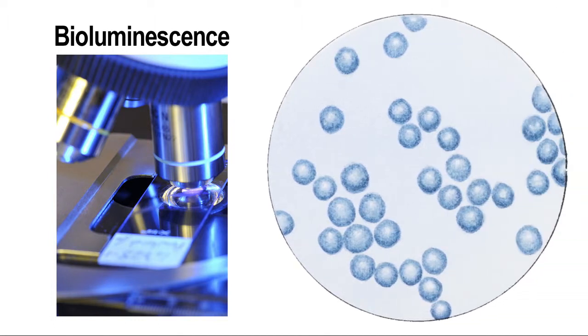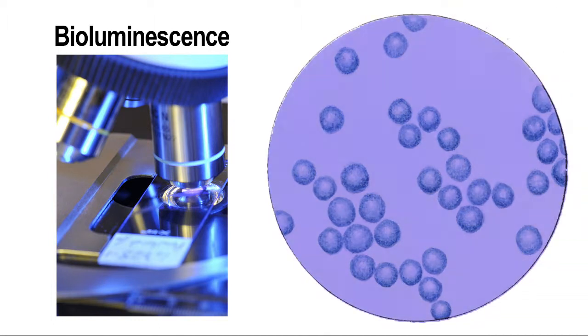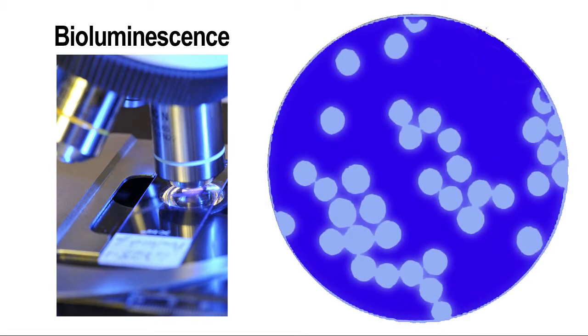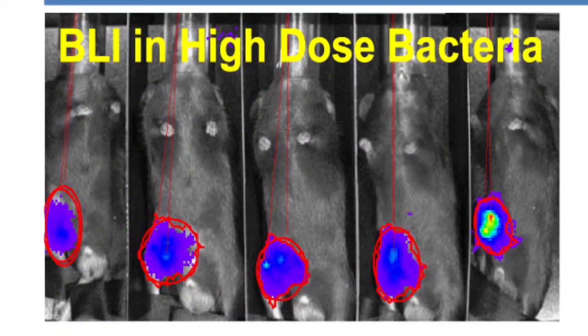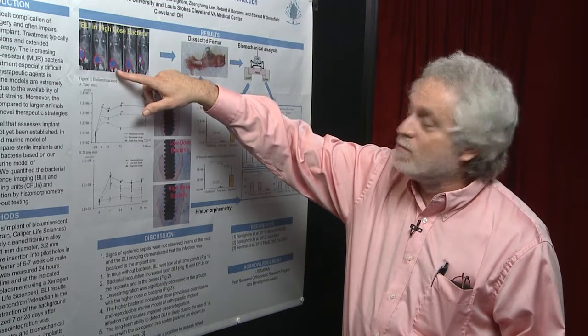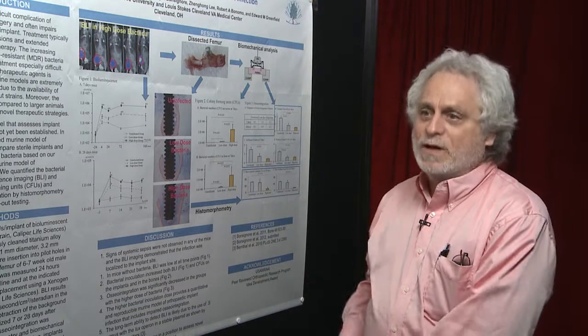One of the things we took advantage of is bioluminescence. The bacteria have been engineered to express a gene that under the right circumstances produces light and we can detect that. The intensity of these spots tells you how much bacteria there is and what you can see is in all cases it's localized over the femur which is where the implant is with the bacteria.